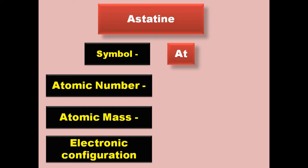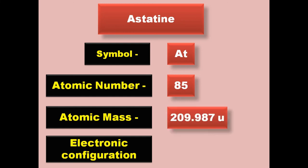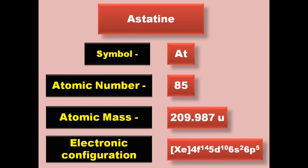Astatine has symbol At, atomic number 85, atomic mass 209.987, electronic configuration [Xe] 4f14 5d10 6s2 6p5. Astatine is a halogen and exists in solid form at room temperature.